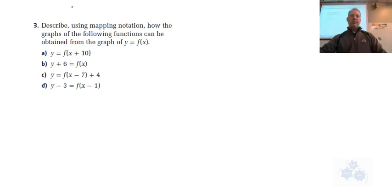Let me read that again. Describe using mapping notation how the graphs of the following functions can be obtained from the graph of y equals f of x. So we're starting with the base function of y equals f of x. And what we're asked to do is to find out and to identify which parameters are being changed.